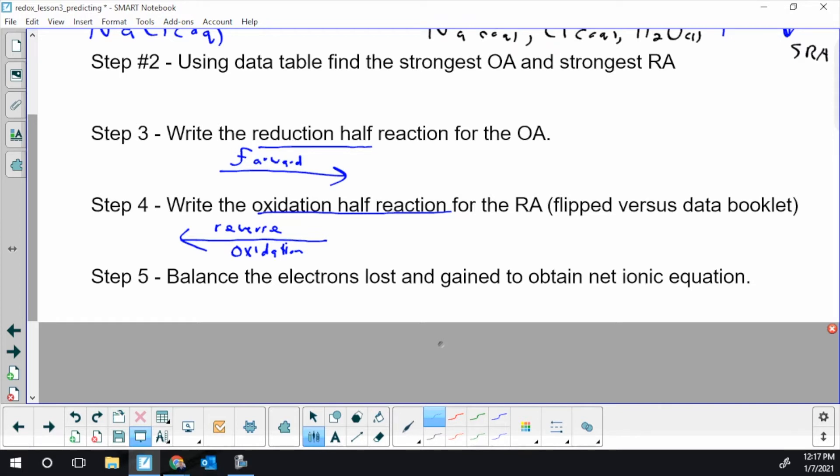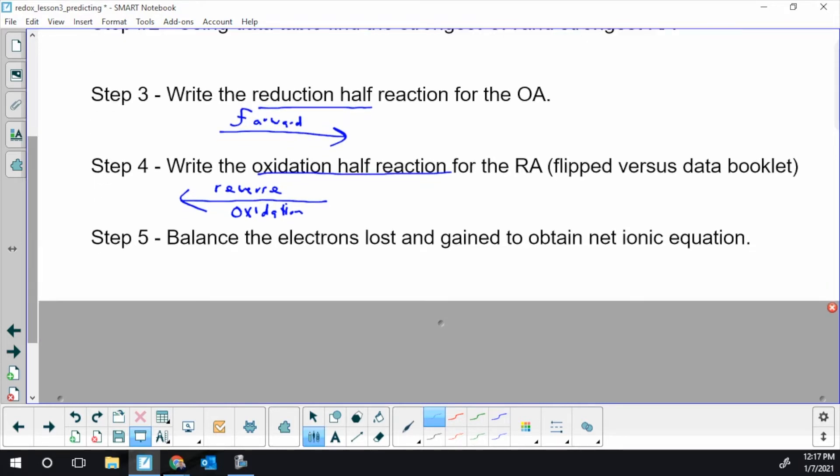We're never going to divide by. In Hess's law, you could sometimes divide something by two. Here, we'll only be scaling up to find the lowest common multiple of electrons. So balance the electrons lost and gained and obtain a net ionic equation. All the spectator ions disappear in the net. So some of the things from step one are going to disappear.